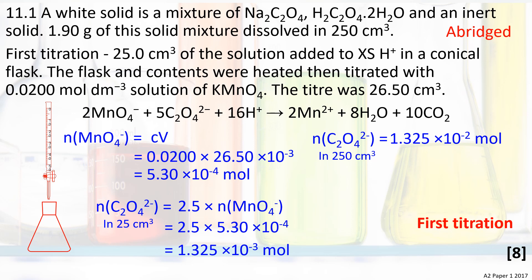It's a 2 to 5 reaction, so multiplying this number by 2.5 gives the amount of ethane dioate ions: 1.325 × 10⁻³ moles. Remember that this is in 25 cm³ of the solution. Multiply this by 10 to find out the amount of ethane dioate ions in the original 250 cm³ solution.